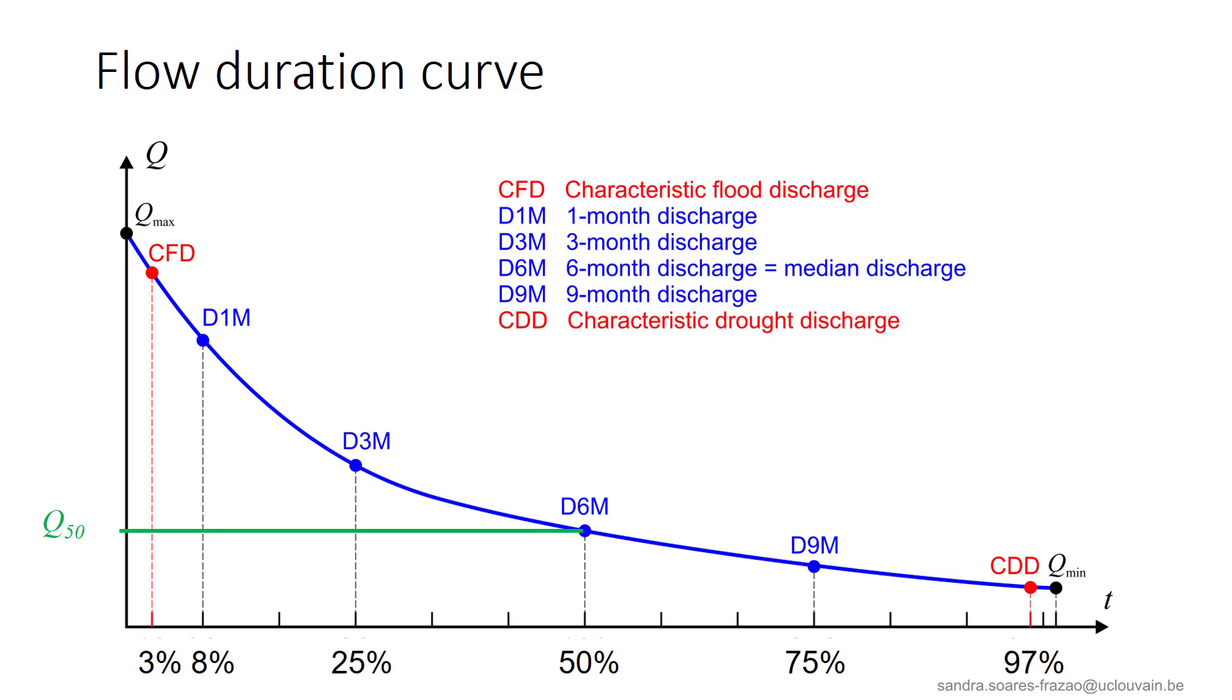Instead of representing the abscissa in terms of days in a year, another common representation is in terms of percentage of the year. So for example, the median discharge D6m would become Q50, the discharge exceeded 50% of the time.